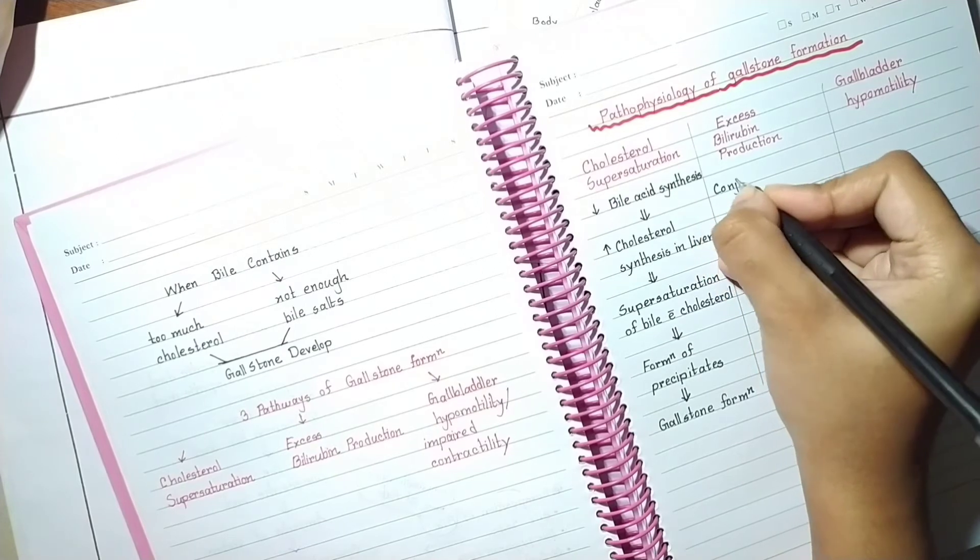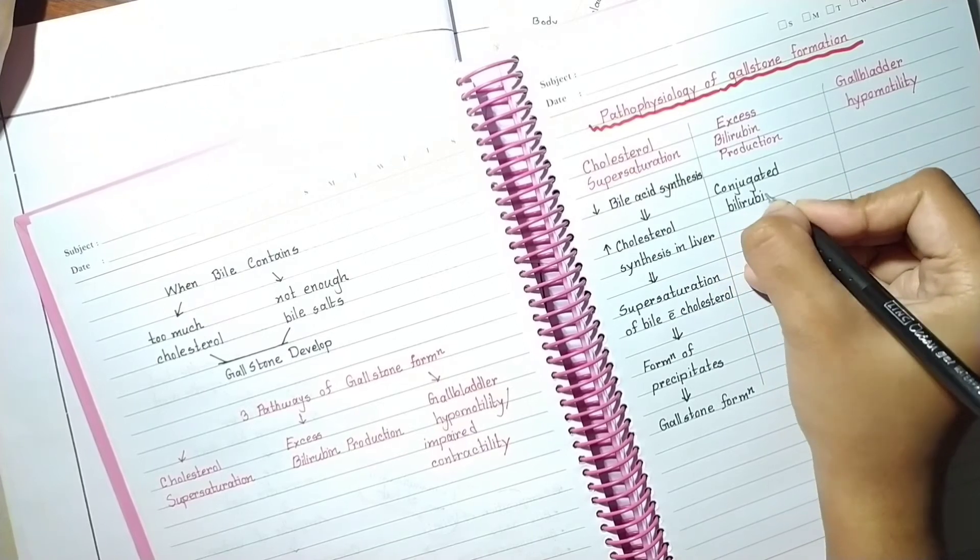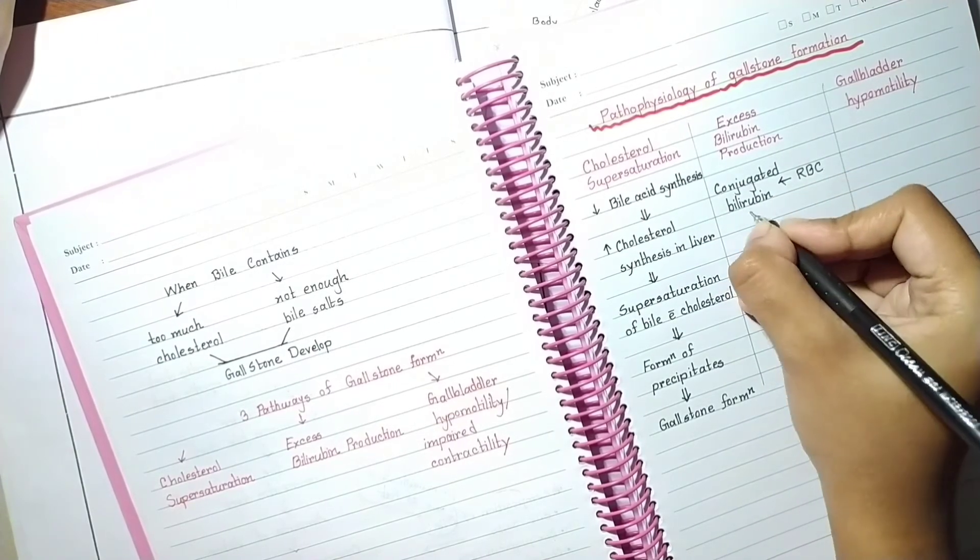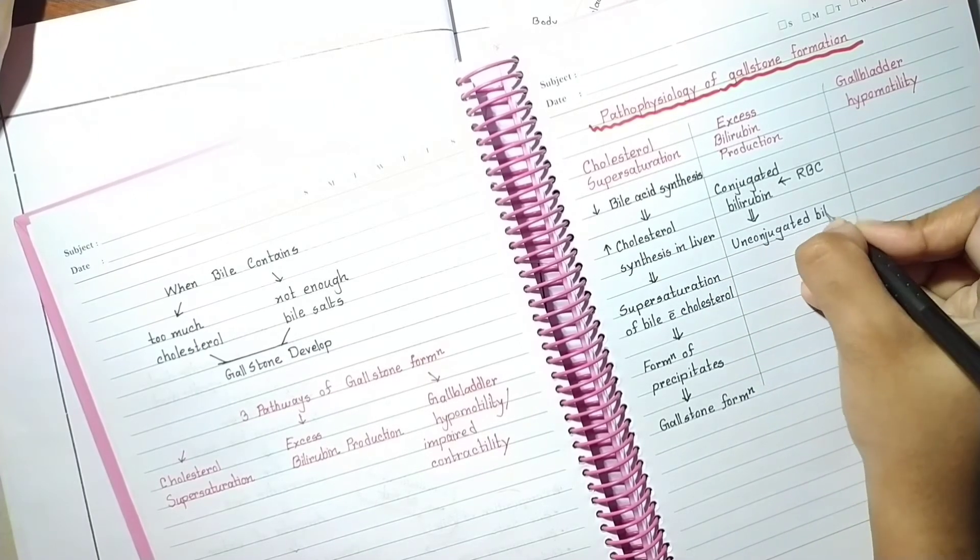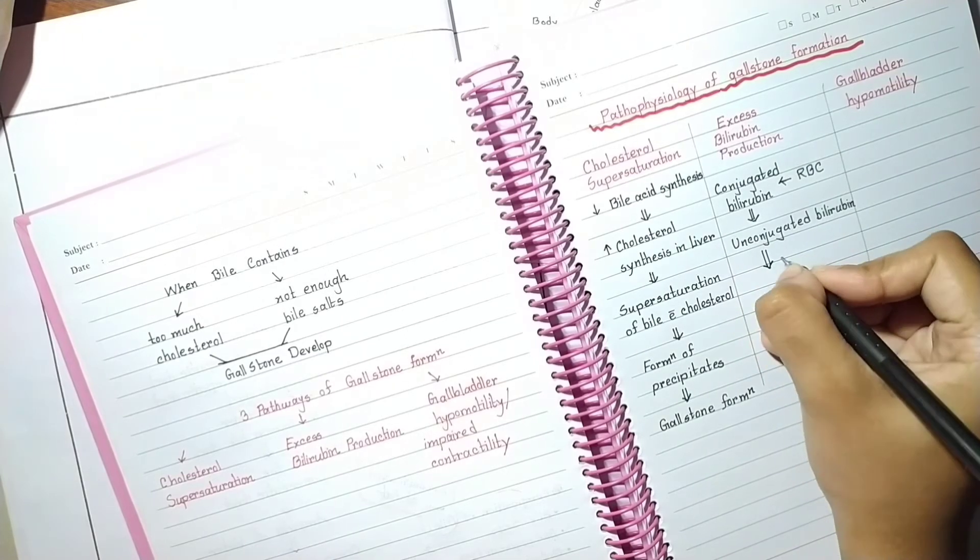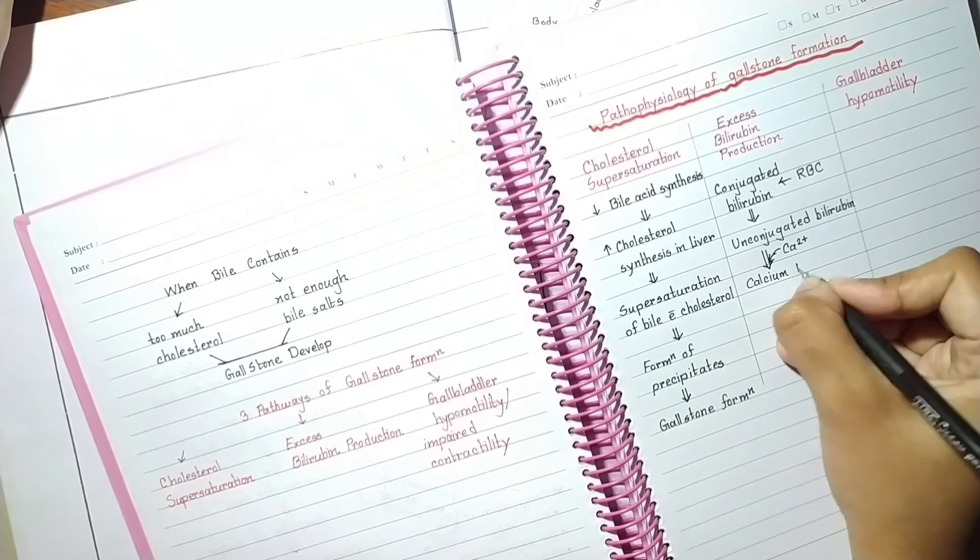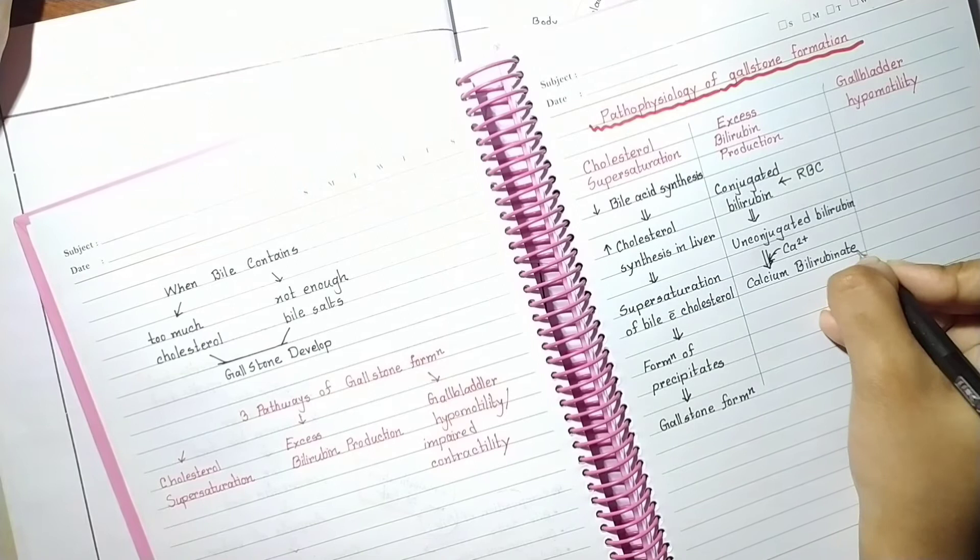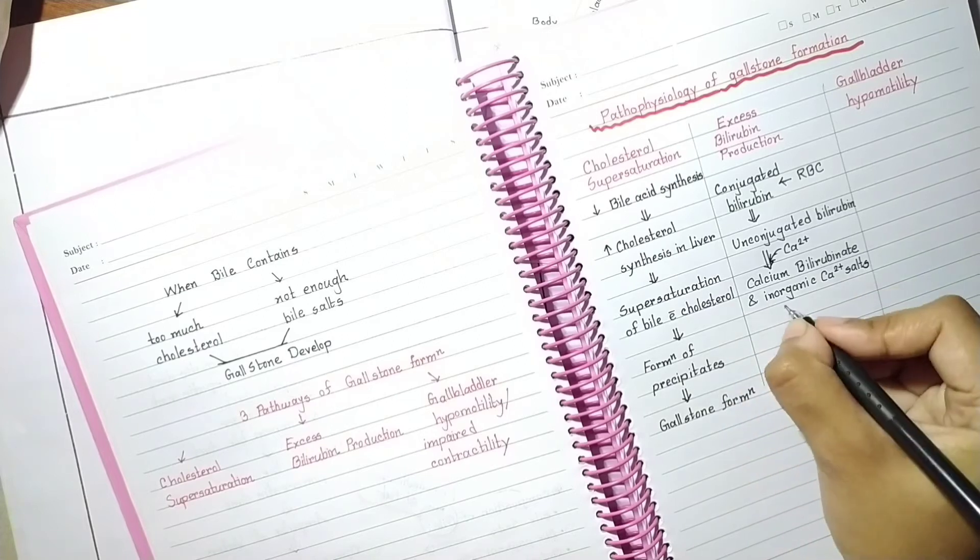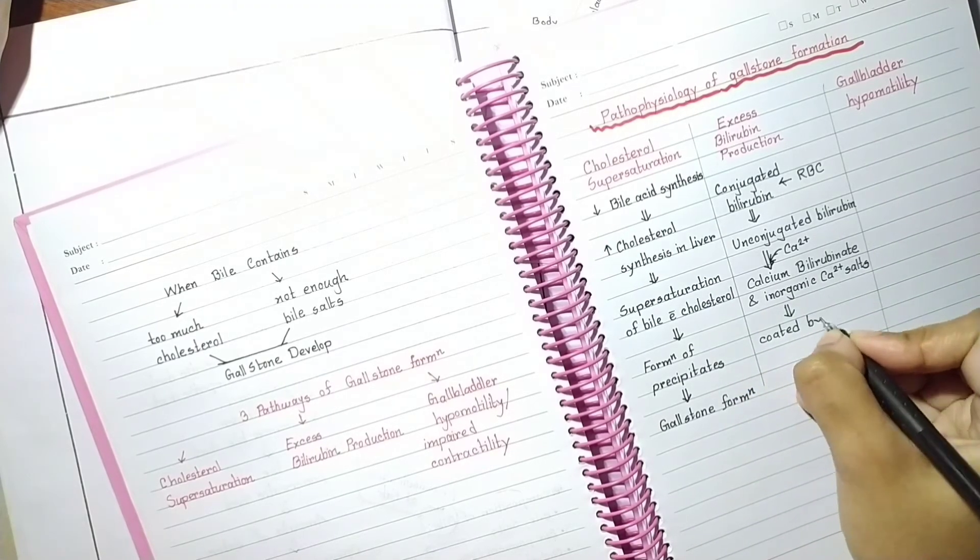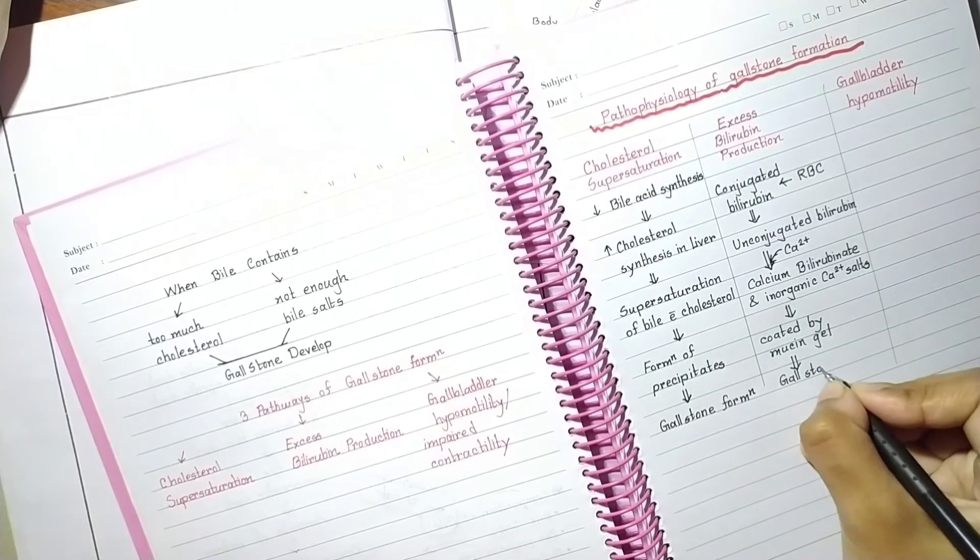In case of excess bilirubin production, conjugated bilirubin comes from the RBC, comes to the gallbladder and becomes unconjugated, which binds with calcium to form calcium bilirubin and inorganic calcium salts, which are further coated by mucin gel. Then gallstone formation occurs.